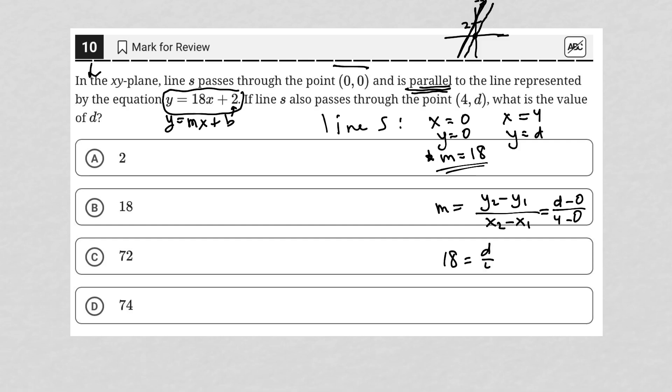So we have 18, which is the slope, equals d over 4, and I can multiply both sides by 4 to solve for d. 4 times 18 is 72, so d equals 72, and my answer is choice C.